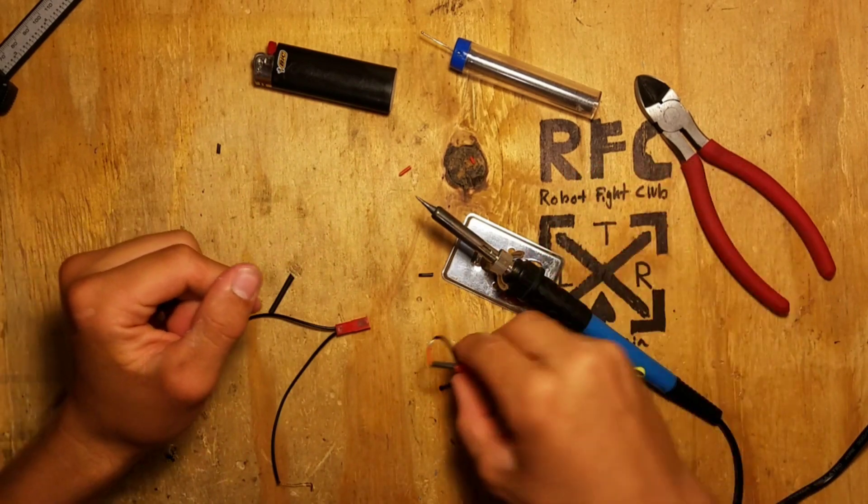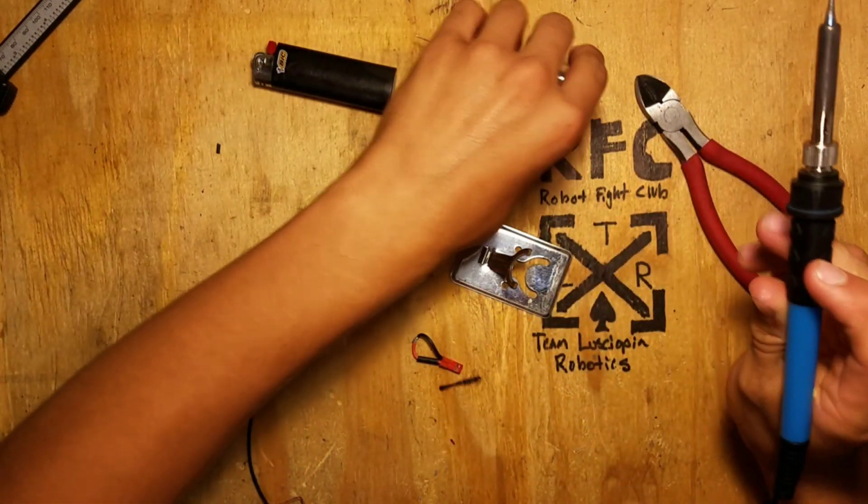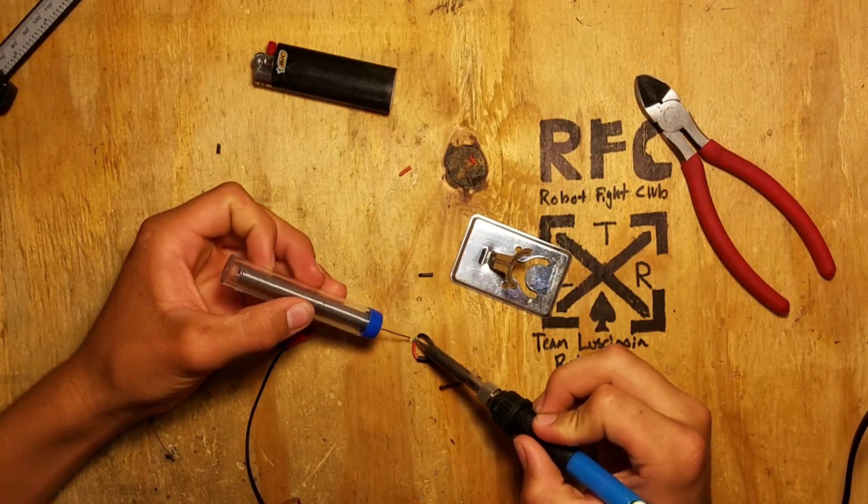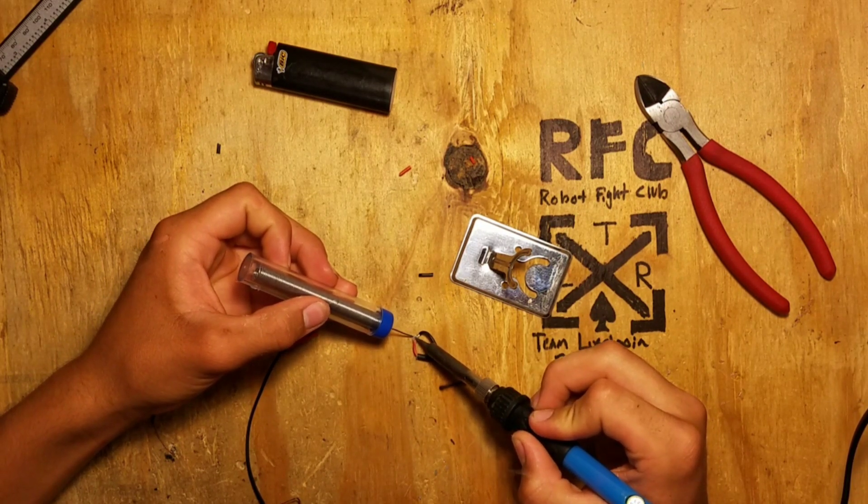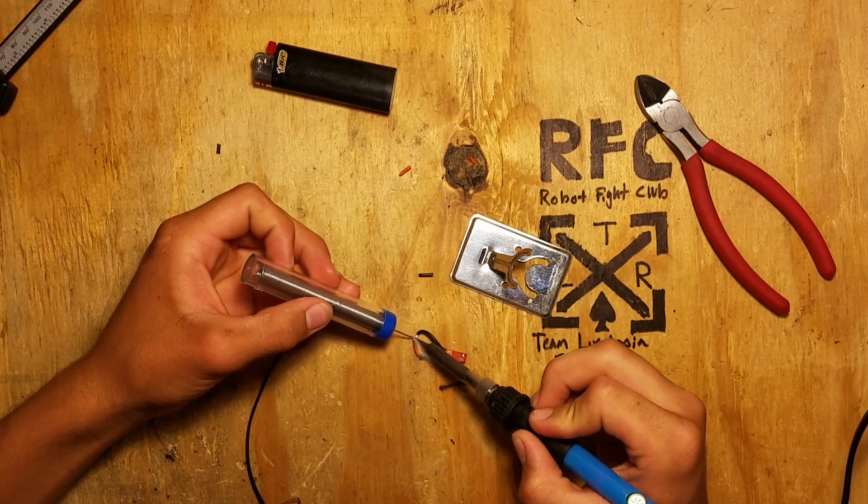Once you have those together you can go ahead and put a little bit of solder onto the wires to ensure they stay together and it keeps a good circuit.